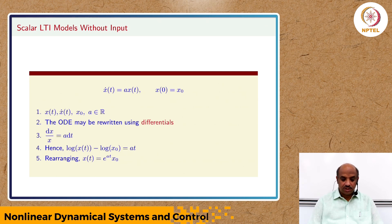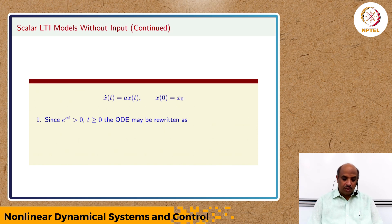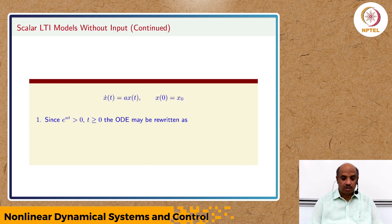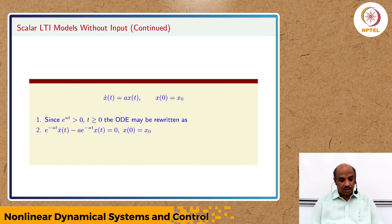There is another way of looking at the same equation. I want to show this second method because it can be extended to vector differential equations. We know e^(at) is always positive for every t. So if we have an equation, we can multiply both sides by e^(−at) — the inverse of e^(at) — without changing anything.